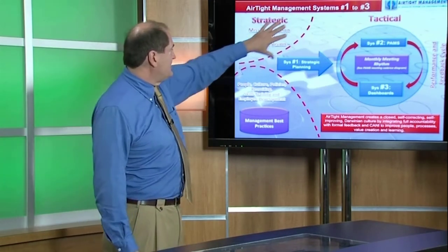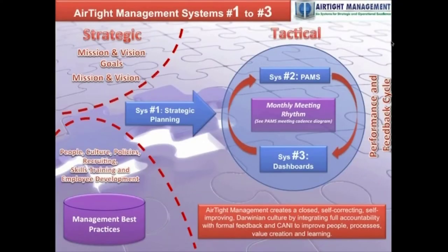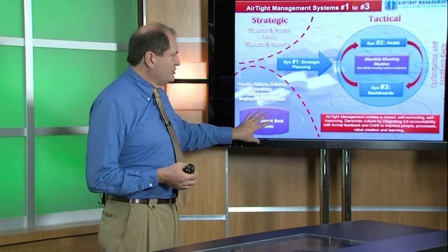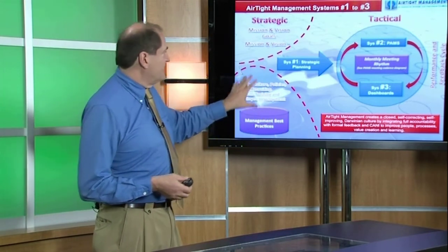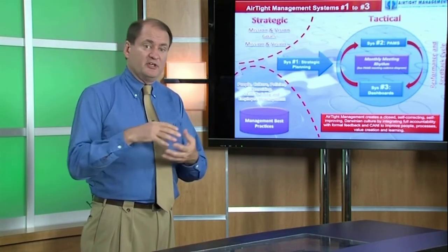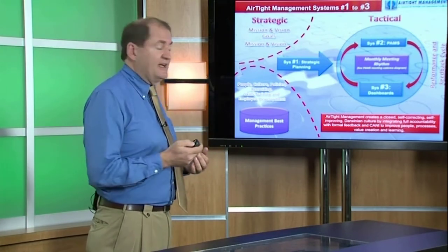This is a diagram of the interaction of the various systems of Airtight Management. Strategic planning — the mission, the values, the goals, the high-level strategies — are something you update on a quarterly basis but do intensely on a one-year basis. That strategic plan feeds into the monthly rhythm of operating a business, so this is strategy feeding into operations or the more tactical level — the management by objective process, the dashboards, the month-to-month adjustments and steering of the business. The people, the culture, the policies, your recruiting, and everything else is a separate area, and all of these go across all areas of the business: sales, marketing, finance, product development, operations, whatever divisions you might have.